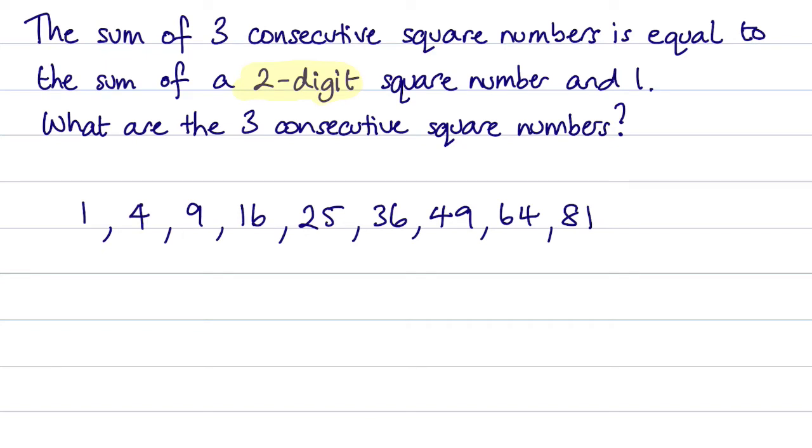Now we want three consecutive square numbers, and that means one after the other. For example, 1 and 4 and 9, they're consecutive. 9, 16 and 25, they are consecutive.